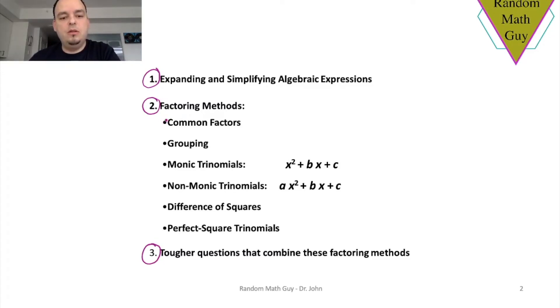Within these factoring methods, the topics are listed in order that you would see them in most textbooks and presented by most teachers. You usually start with what are called common factors, and then that branches off into grouping. Finally, we have these other four types of factors that typically deal with quadratics or polynomials that involve x squared, but they can be generalized to more advanced polynomials.